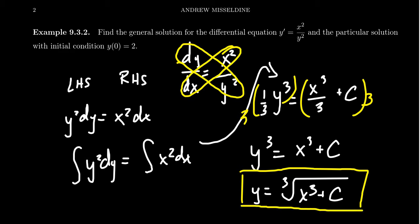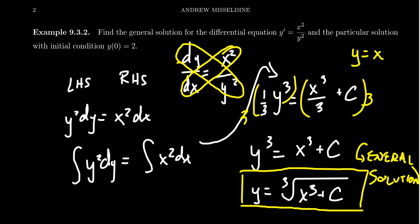Be cautious with the right-hand side — we often get tempted to simplify because we have x cubed inside a cube root. That's a no-no; exponent rules do not allow us to simplify the cube root there. Don't forget the plus c. If we had forgotten the plus c, we'd get just the cube root of x cubed, which simplifies to x. And although y equals x is a solution to this differential equation — if you take the derivative you get 1, and x squared over y squared with y equals x gives x squared over x squared which is 1 — that's just one particular solution. We're looking for the one when the initial value is y(0) = 2.